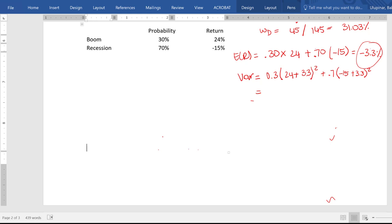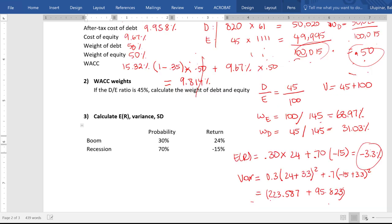I am going to adjust that by dividing by 10,000. So this is 223.587. This is 95.823. Divide this by 10,000. And it will be equal to 0.03194.